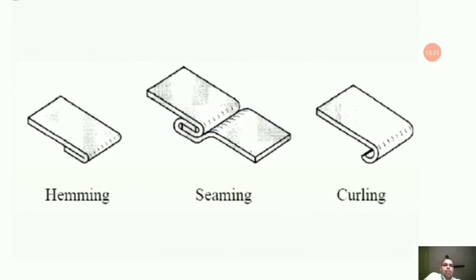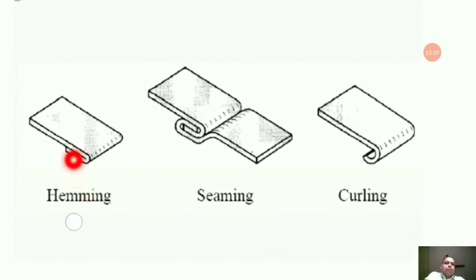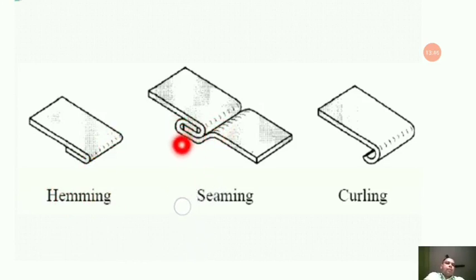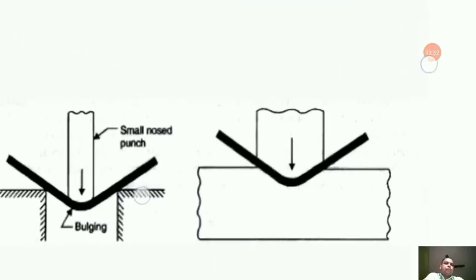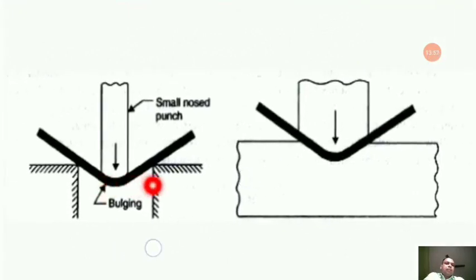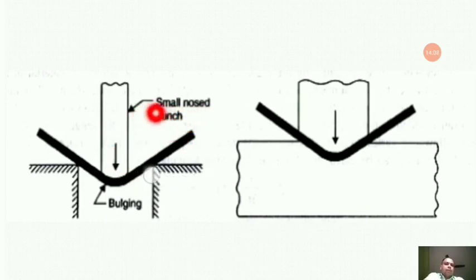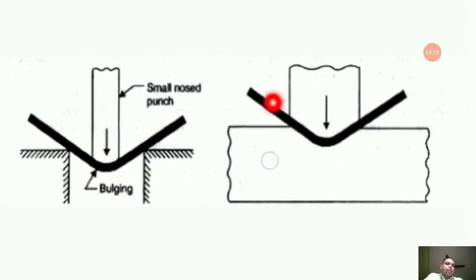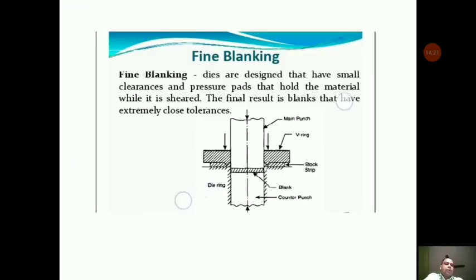Here are some more commonly used sheet metal operations. Bending one of the edges or ends of a sheet is known as hemming. Joining by this operation is known as seaming. The operation of curling forms a curled edge on the sheet. There is also bulging, where a small-nosed punch applies force to a workpiece causing it to bulge outward.